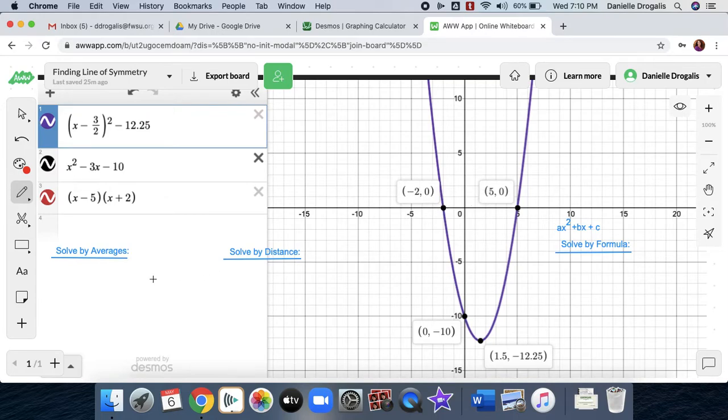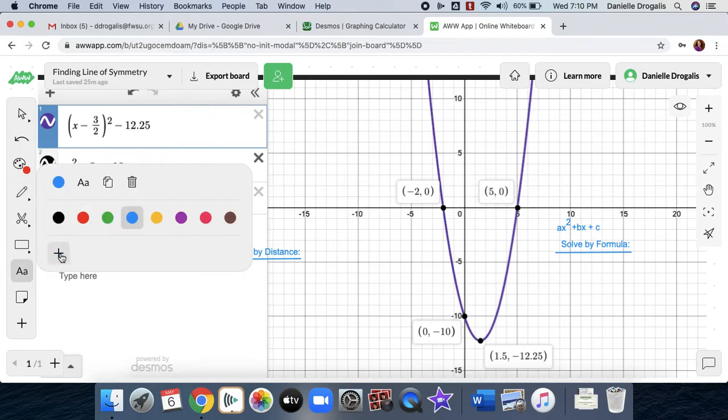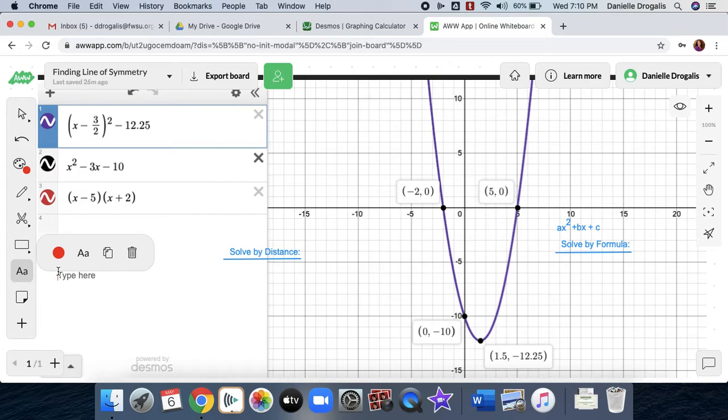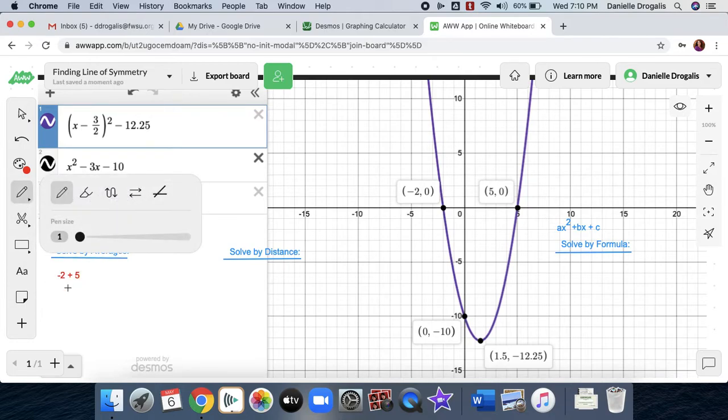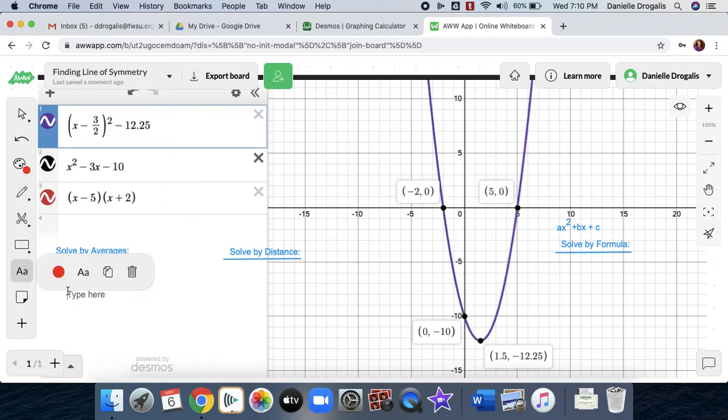And what we can do is solve by averages, which I will show the work here. So the laws of average say that you add up your quantities, divide by the number of things you added together, and then that is your average.